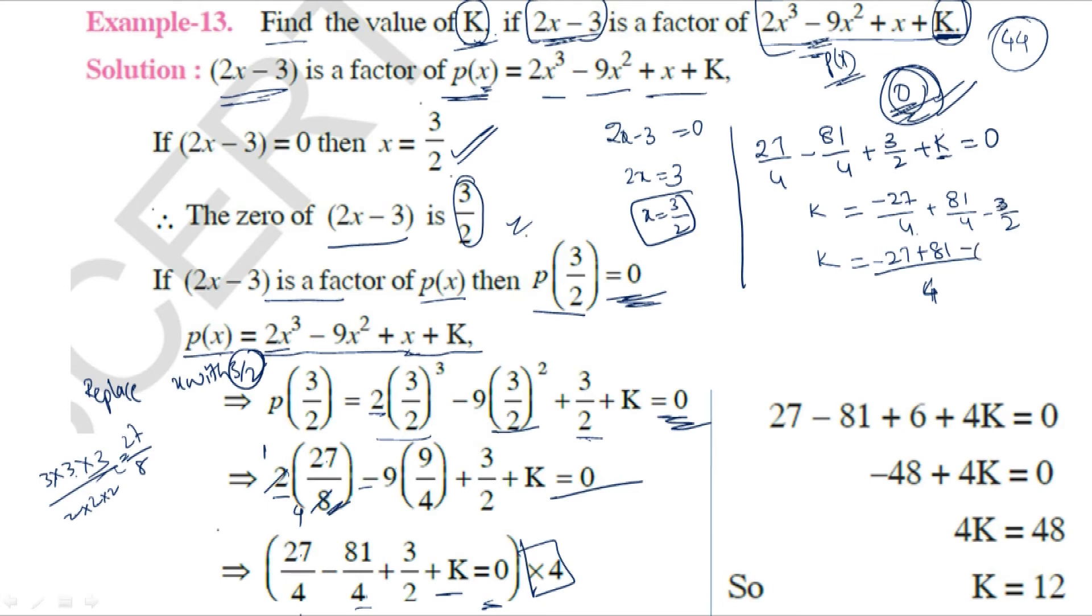Converting 3/2 to fourths: 3/2 = 6/4. So K = (-27 + 81 - 6)/4. Multiplying both sides by 4: 4K = -27 + 81 - 6.